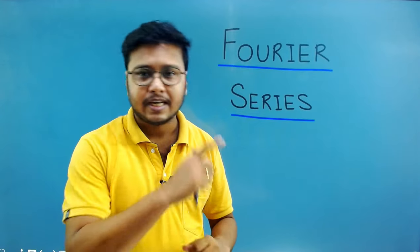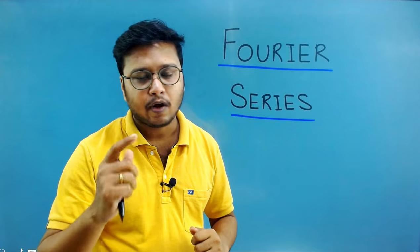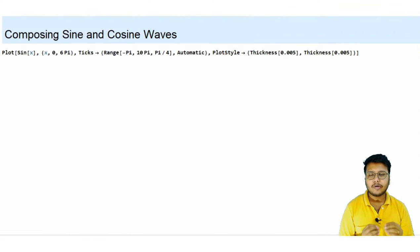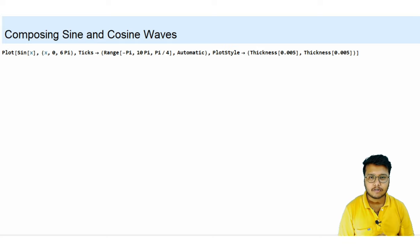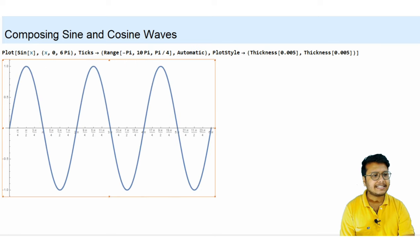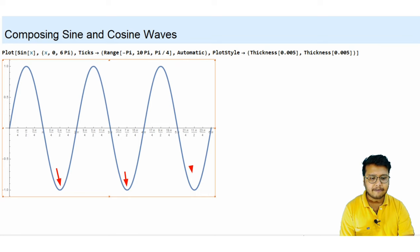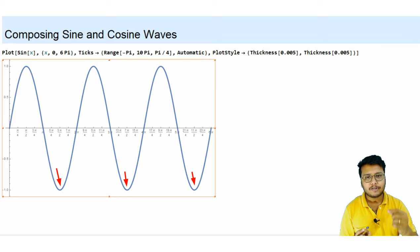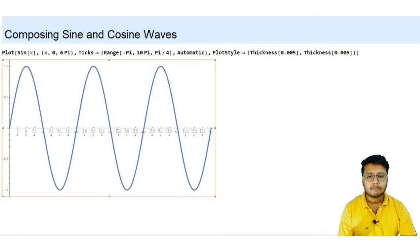We are going to observe a very interesting property of periodic functions, especially the sine and cosine functions. Sine and cosine are both periodic functions. I have taken a sine function and you can see that the same value repeats itself — for example, after every two pi the same value keeps on repeating. Every value we take on the sine curve keeps on repeating after every two pi.